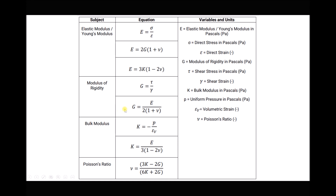We have equations for determining the modulus of rigidity G when the elastic modulus E and the Poisson's ratio are known, and equations for calculating the bulk modulus K when E and the Poisson's ratio are known. Finally, there's an equation for calculating Poisson's ratio when E isn't known but the bulk modulus K and the modulus of rigidity G are known. Providing we know two of these elastic constants, we can use a combination of these equations to calculate the remaining two.